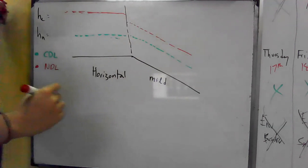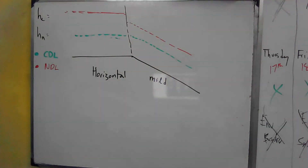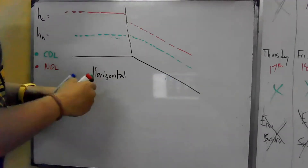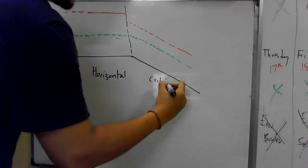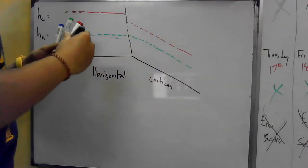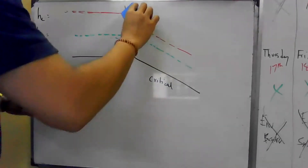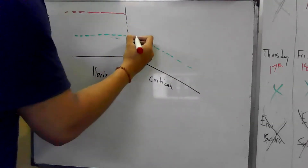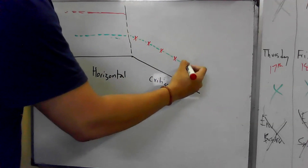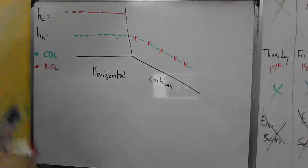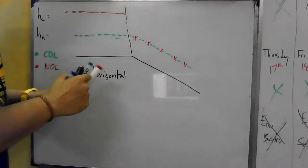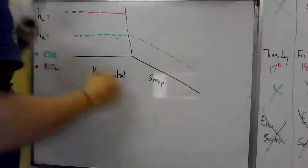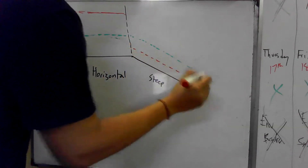Do you feel like it's going to be a milder point? I'm very happy to be milder — I'm very happy to be critical. Exactly critical. Critical means that our NDL is exactly the CDL. Our CDL exists. So when we have a very steep slope, the NDL and CDL coincide exactly.